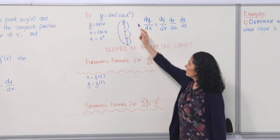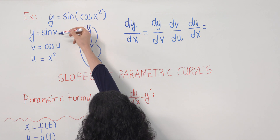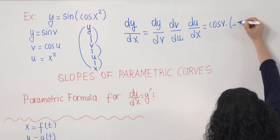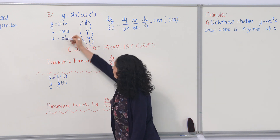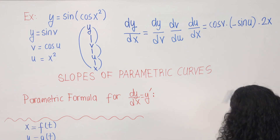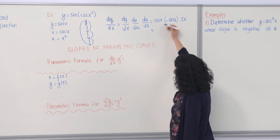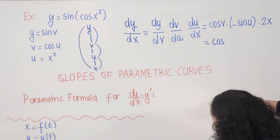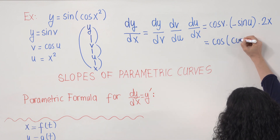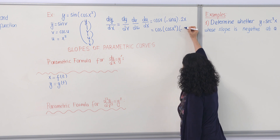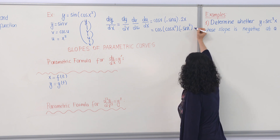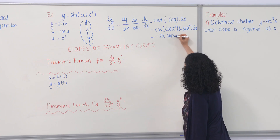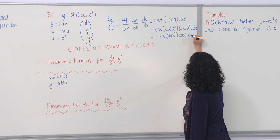The derivative of y with respect to v is cosine(v). The derivative of v with respect to u is minus sine(u). The derivative of u with respect to x is 2x. Substituting back, since v = cos(u) and u = x², we get cosine(cos(x²)) times minus sine(x²) times 2x.